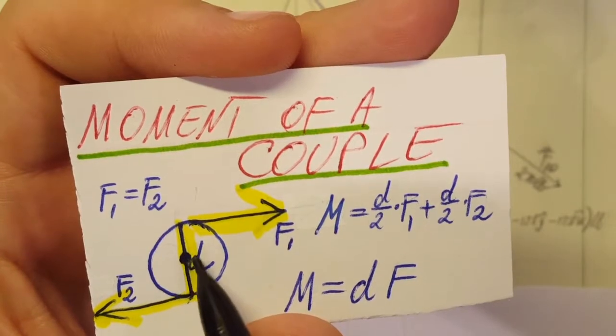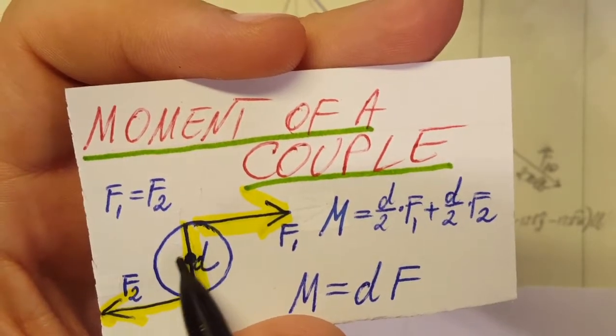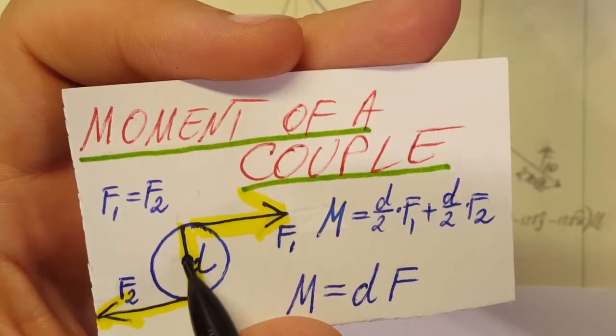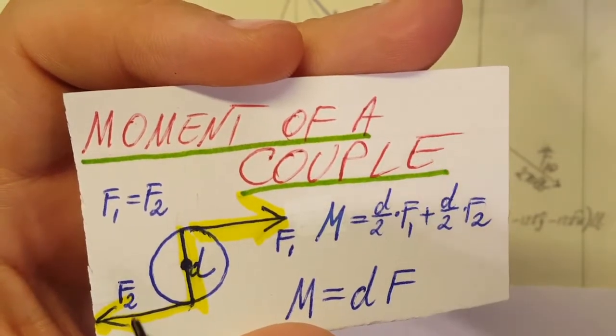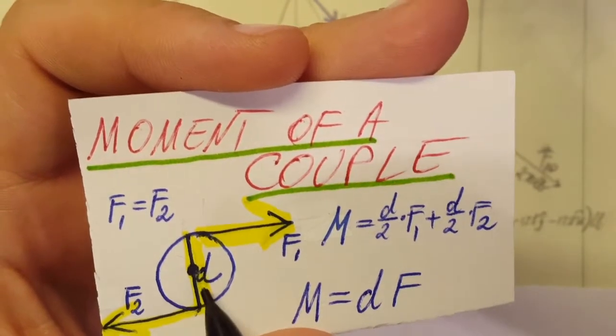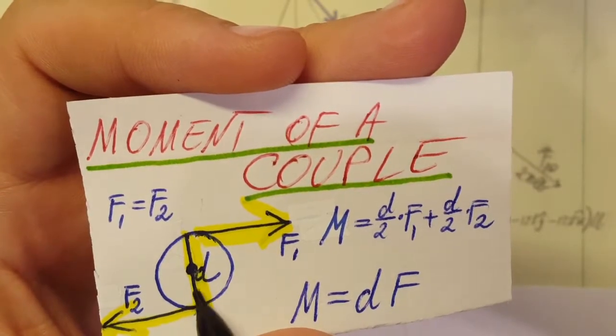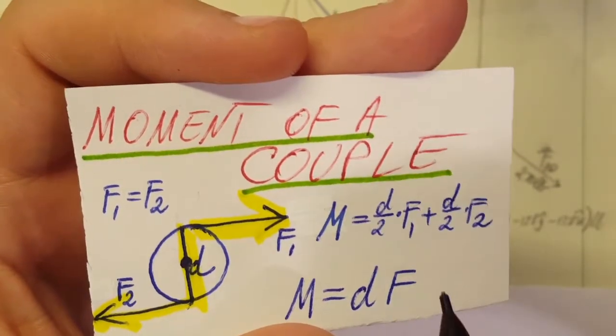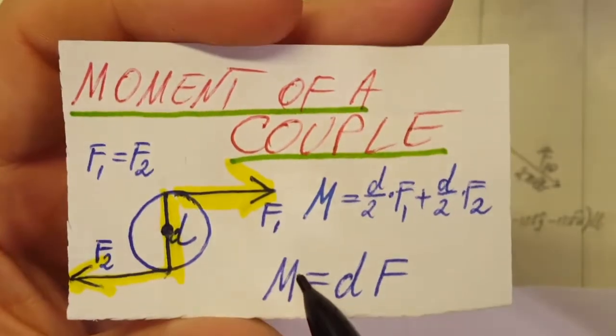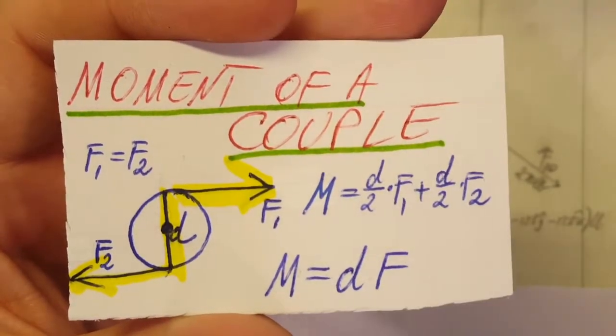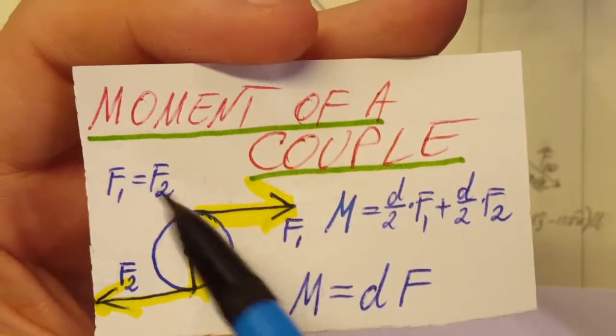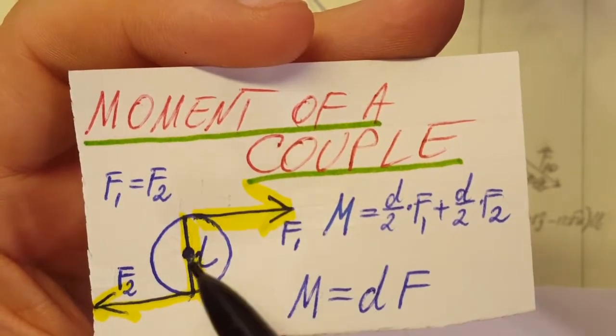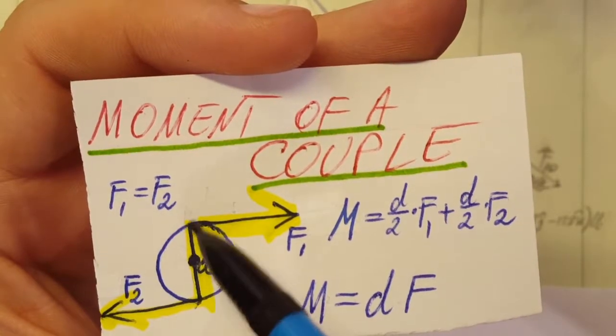Plus the other force times this other half distance. Okay, if we add this up, we see that the moment equals the force. So a couple's moment is force times distance. They are equal. So the force times the total distance between the two forces.